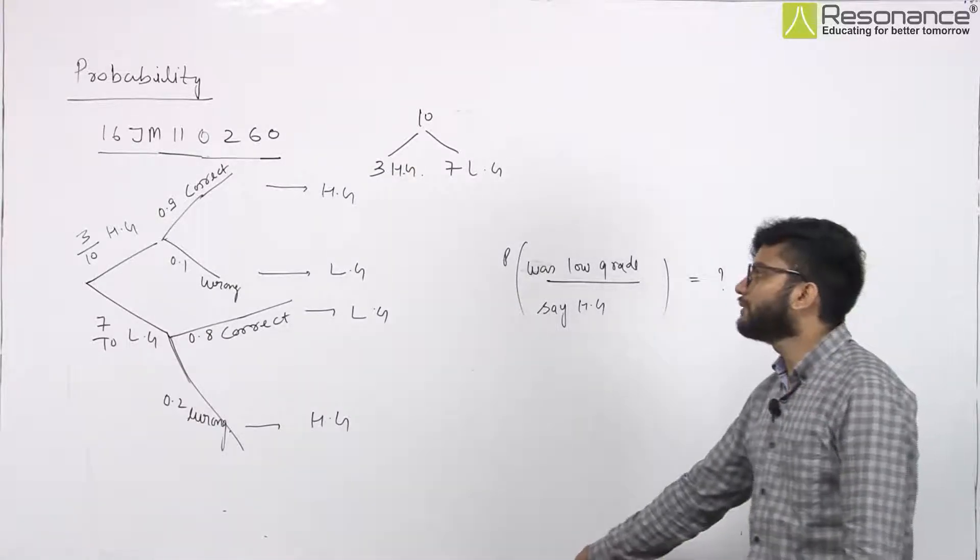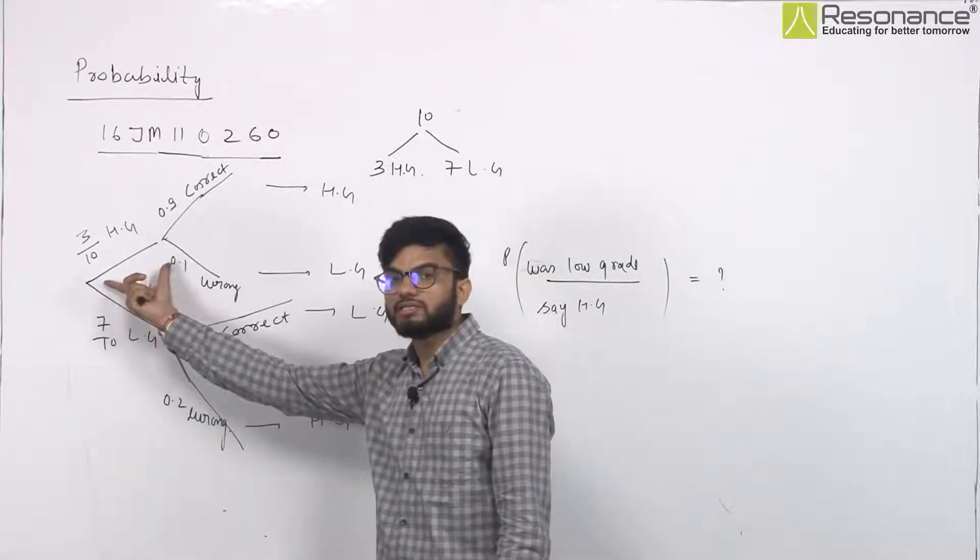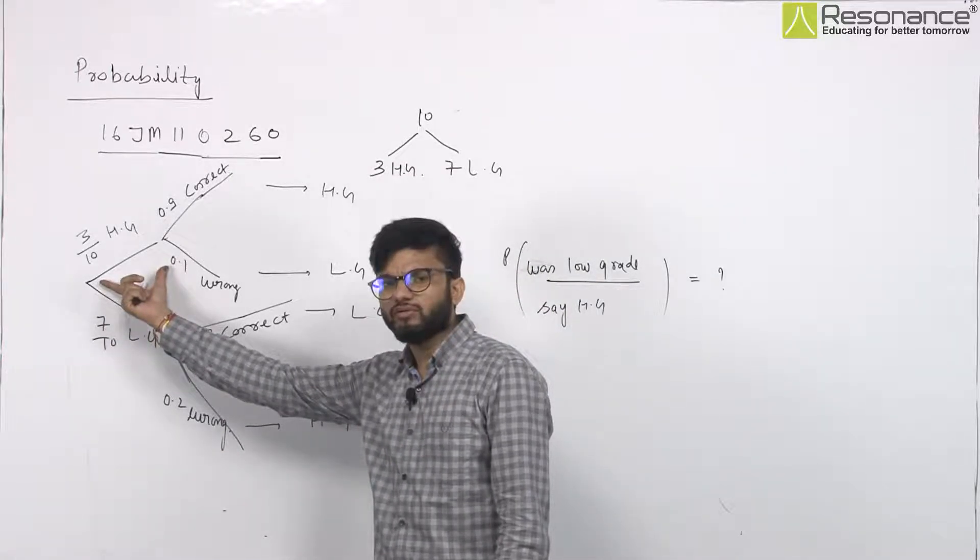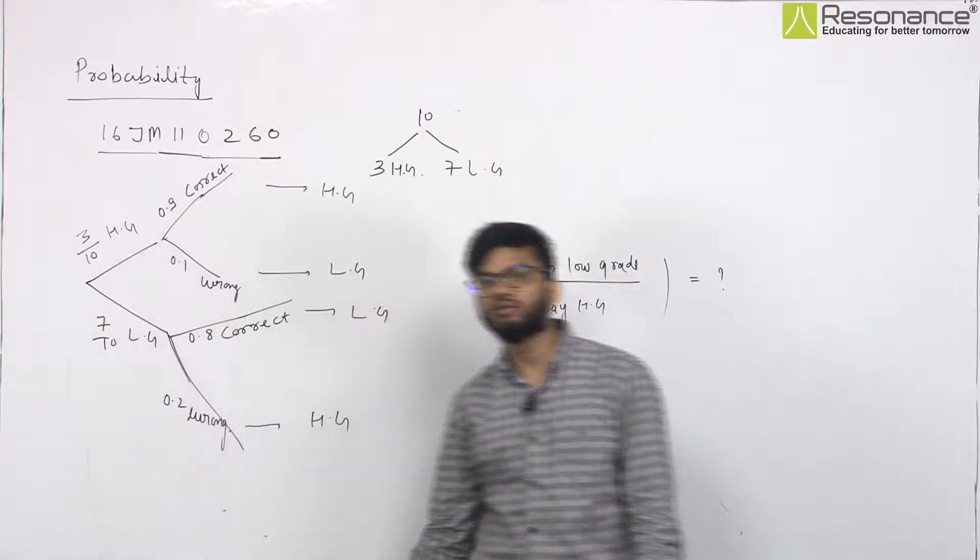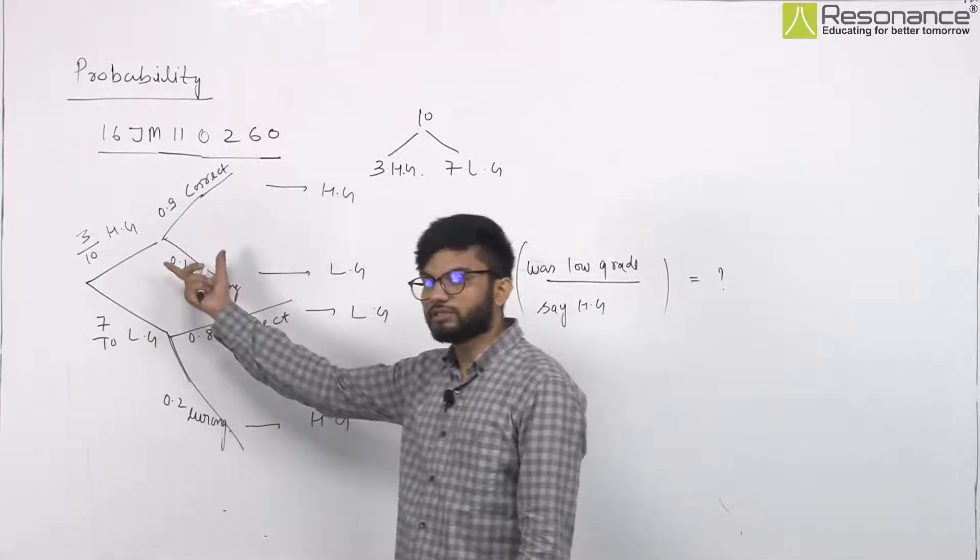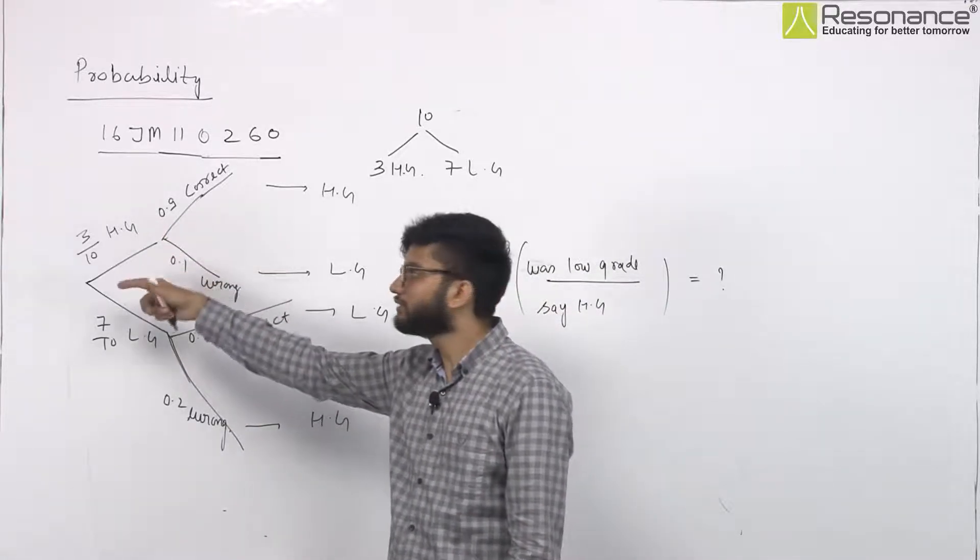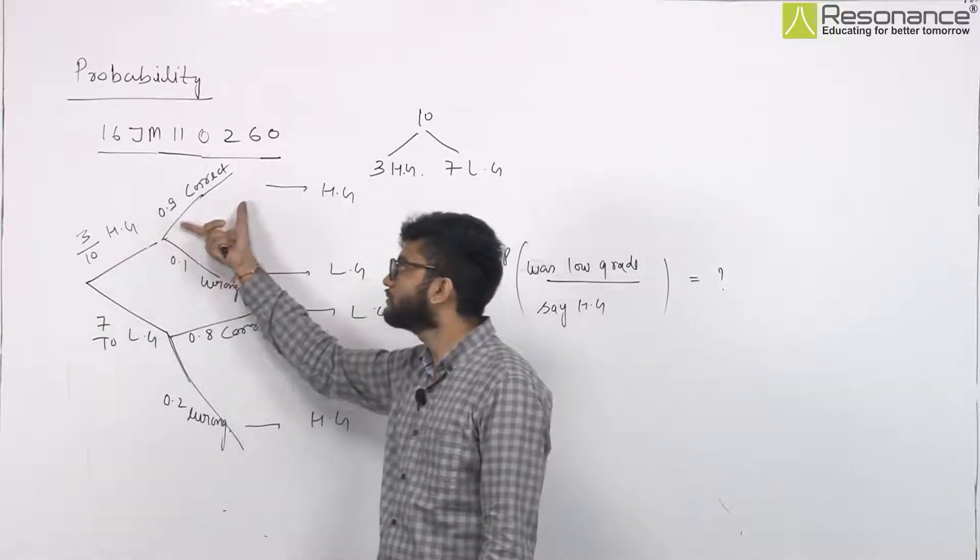If you have been asked this question, keep some data from this way. If you have a T curve, 3 curves are high-grade and 7 are low-grade. Modi ji is a T tester, checking and telling that if there is a high-grade curve, if it is wrong, if it is unknown...